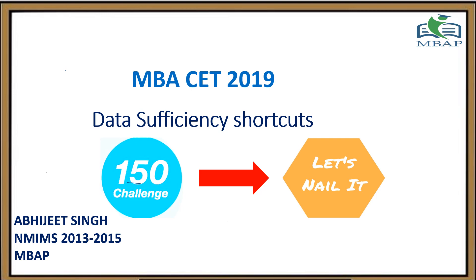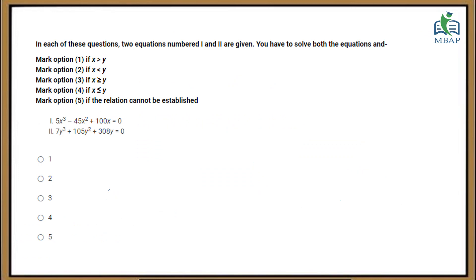Hello everyone. In this video I'll teach you a couple of data sufficiency based question shortcuts which will help you clear the MBA CET examination with a decent score. The quant section of the MBA CET examination will cover 50 marks — out of those 50 marks, 25 is going to be pure math questions, and 25 is a mixture of data comparison, data interpretation, and data sufficiency based questions. One important category is data comparison, where two quantities are mentioned and you have to solve to see which quantity is greater.